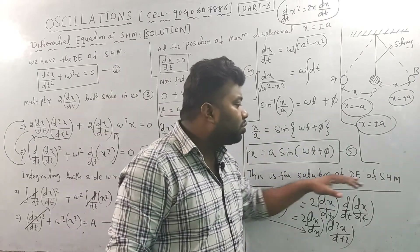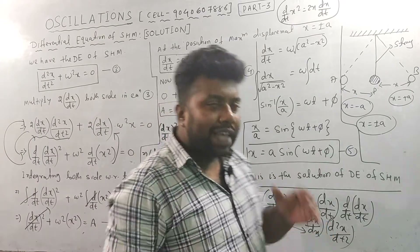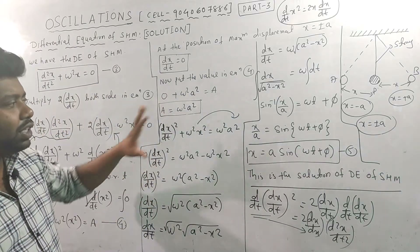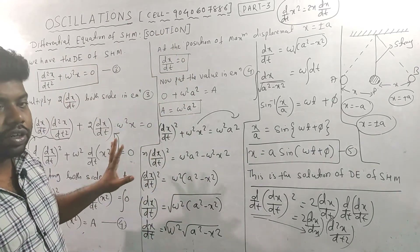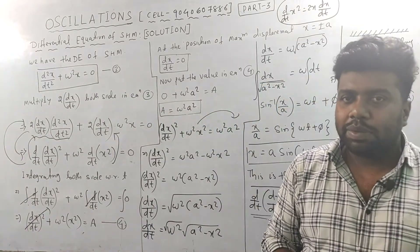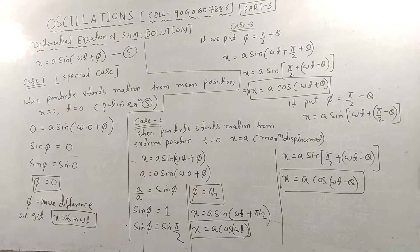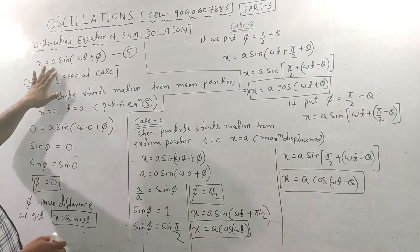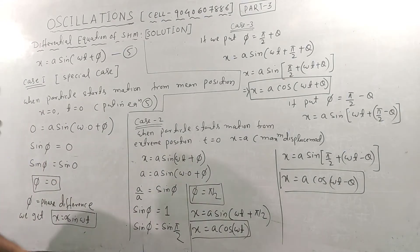This equation — x = A sin(ωt + φ) — is called the solution of the differential equation. This is a very important derivation from the exam point of view. If you look at different cases, you can see different special cases. The formula is x = A sin(ωt + φ), and we will now compile the special cases.